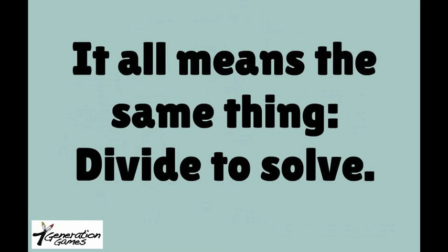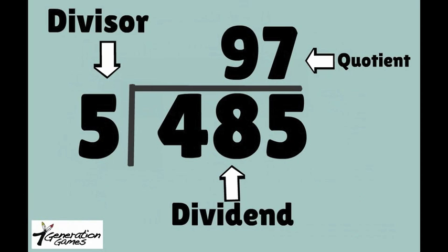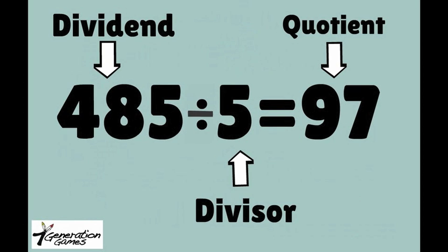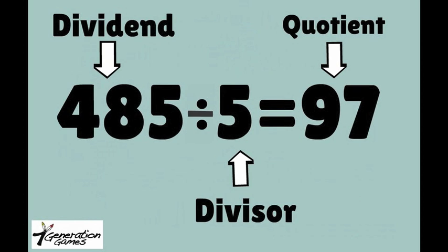With each problem, you will still have a divisor, a dividend, and a quotient, whether it looks like this, or like this, or like this. You'll notice when the slash or division sign is used, the dividend is the first number in the problem and the divisor is second.